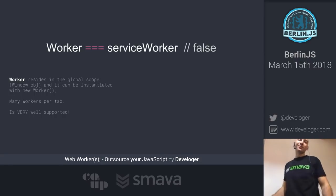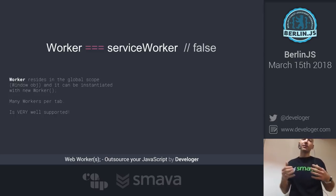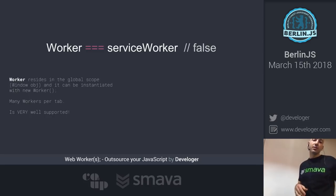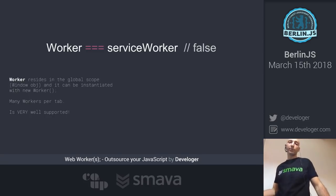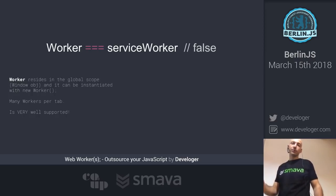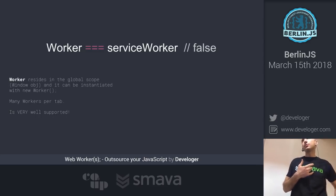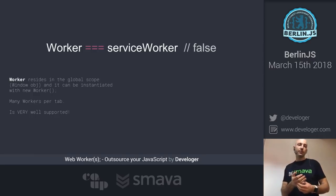The web worker and the service worker are not the same. The worker resides in the global scope, meaning you can instantiate it from anywhere by using the new Worker keyword. You can have as many workers per tab as you want — this is a very key difference between the service worker and the worker.